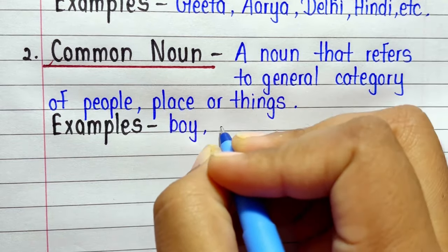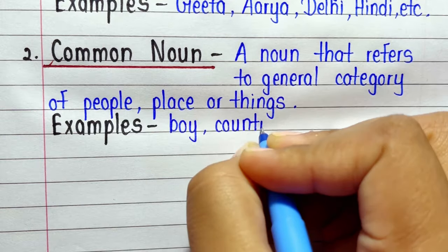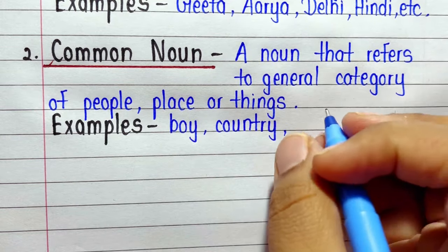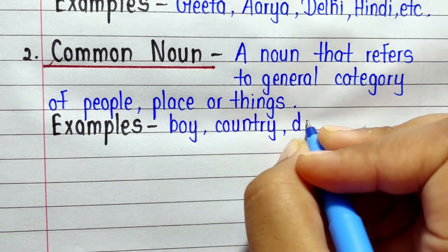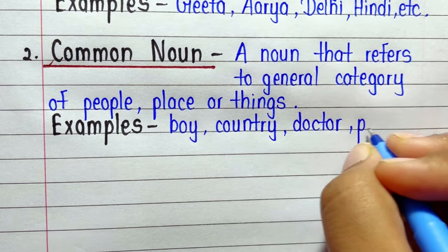Number two: Common Noun. A noun that refers to general category of people, place or things. Examples: boy, country, doctor, pen, etc.